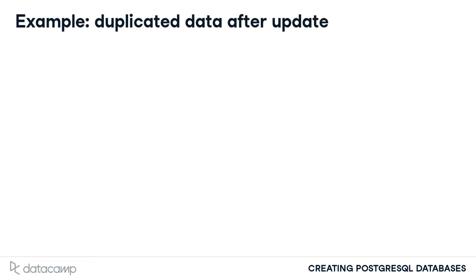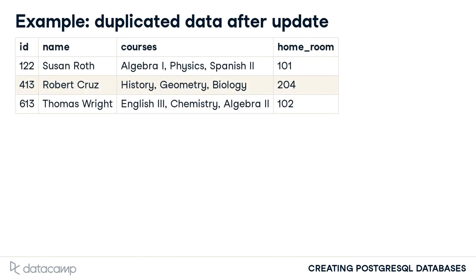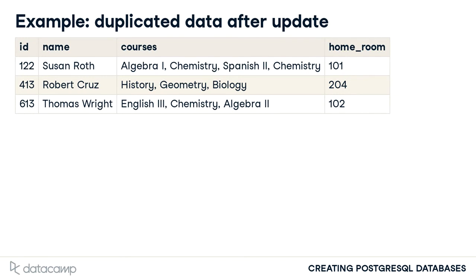Using this table design, each student has multiple courses listed in a single column. A sample of records is shown here. If Susan wants to take chemistry instead of physics, the courses column must be updated. However, enforcing that a course name appear only once within the column value would need to be handled outside of the data integrity mechanisms of the database. A school staff member may not have realized that the change of Susan's courses had already been made, resulting in the chemistry course being added again. In such a case, additional actions must be taken to ensure that this duplicated data does not surface in a student progress report or other downstream processes.